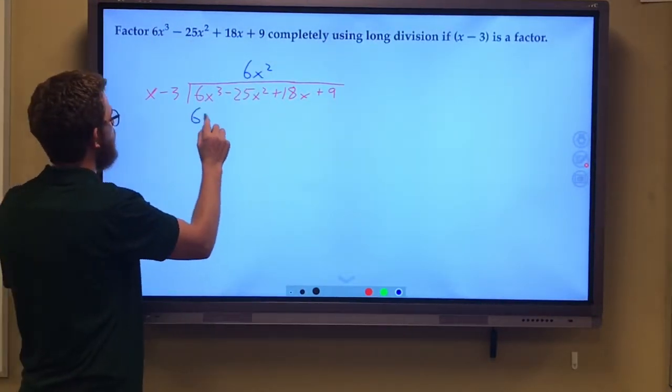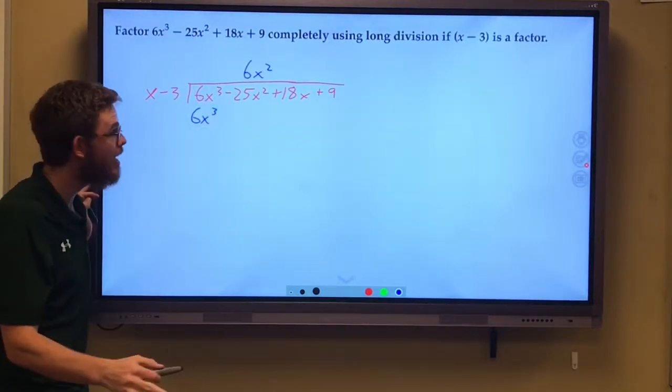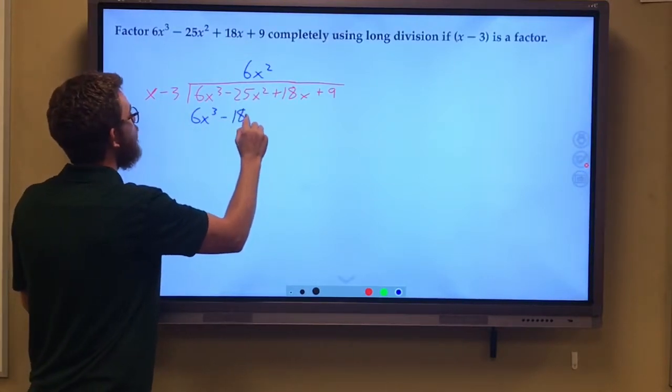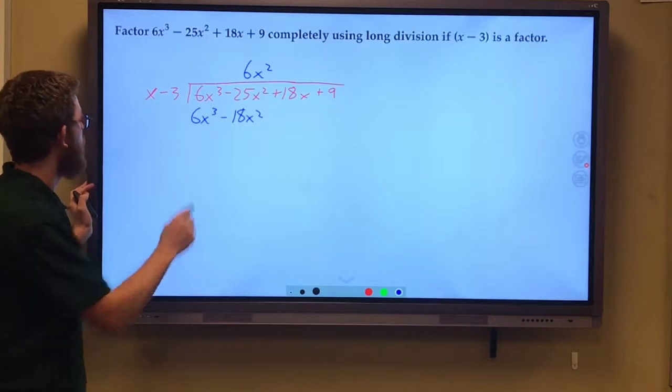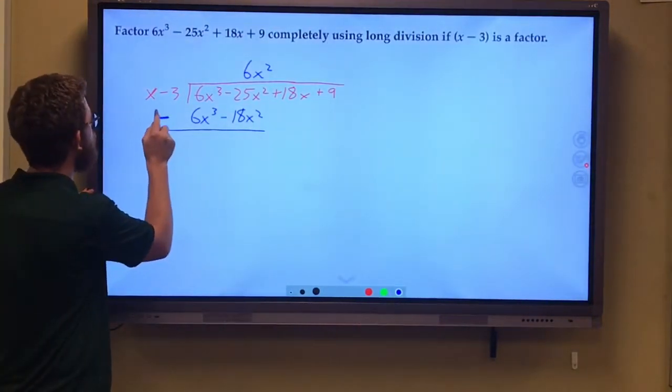6x squared times x gives me 6x cubed. That's the goal, to get it to look exactly the same. 6x squared times negative 3 is a negative 18x squared. Just like in long division in 6th grade, we now subtract.